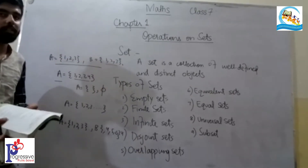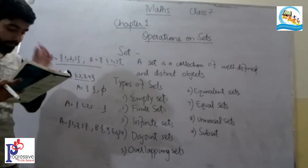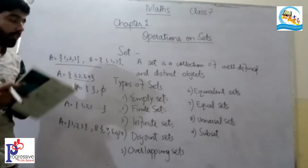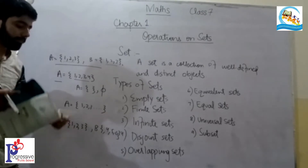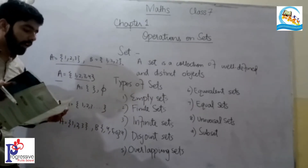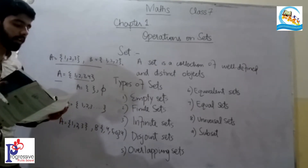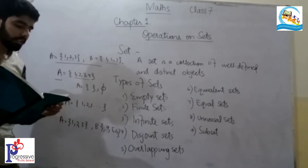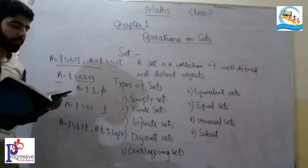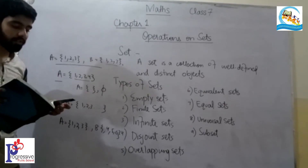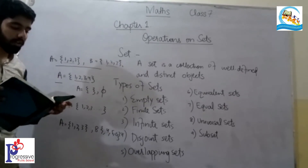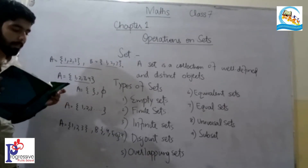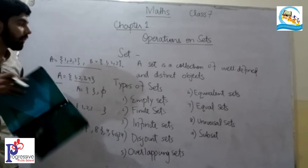Next is universal set. A set which contains all sets under consideration is called a universal set. For example, a set containing months like January, July, June, April, August — a set that contains all sets under consideration.